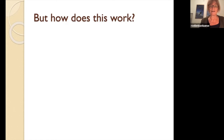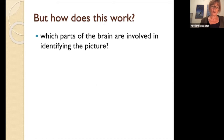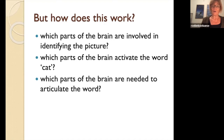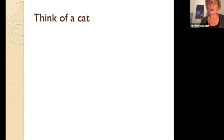How does it work? What happens when you see a picture of a cat? What we would like to know, because of brain surgery, is which parts of the brain are involved in identifying the picture — that's the first step. Then, which parts of the brain are involved when you activate the word 'cat'? And which parts of the brain are needed to articulate the word?